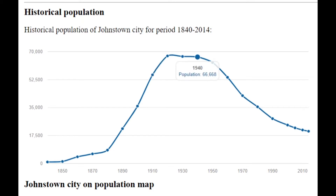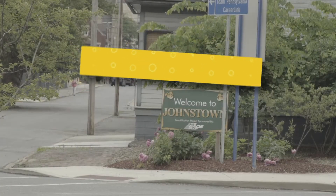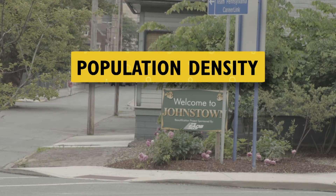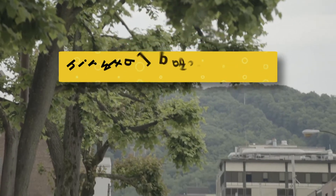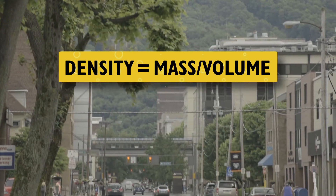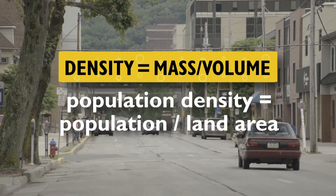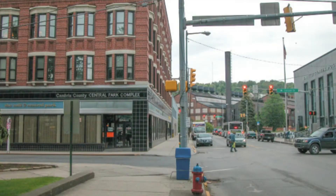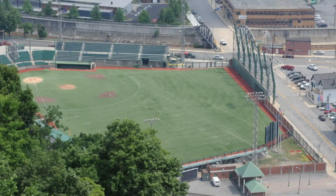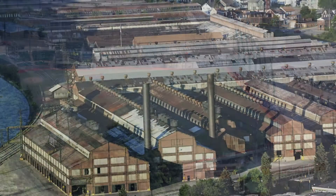However, around 1940, jobs started to leave the region, which meant people started to leave the region, too. It's sometimes helpful to look at a statistic called population density, which refers to the number of people in a given space. In science, density is the amount of matter per unit of volume, or how much stuff you have in a given space. The formula to calculate density is mass divided by volume, and we can use area instead of volume to determine population density. A decreasing population density may help convince city leaders that there is room for more green space in our city.